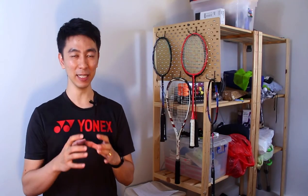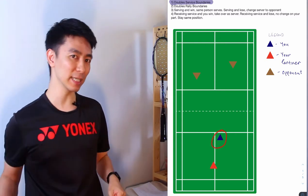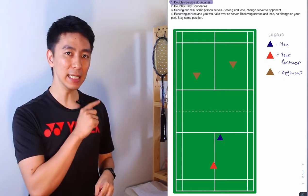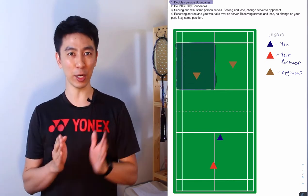The first point is about the doubles service boundary. You see this circle over here? If you are this person serving over there diagonally, this highlighted portion is where you are allowed to serve to. It includes the sideline but it doesn't include the back line.